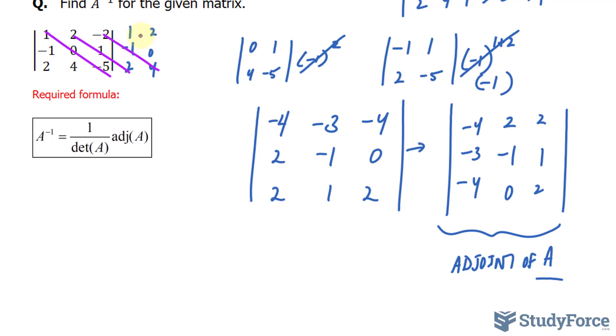The trick that we learned is that we add up the product of the diagonals, subtract the product of these diagonals. So starting with the product of the diagonals moving to the right, 1 times negative 5 times 0 is 0, plus 2 times 1 times 2 is 4, plus negative 2 times negative 1, that's positive 2, times 4 is 8. And we will subtract this from the product of the others.